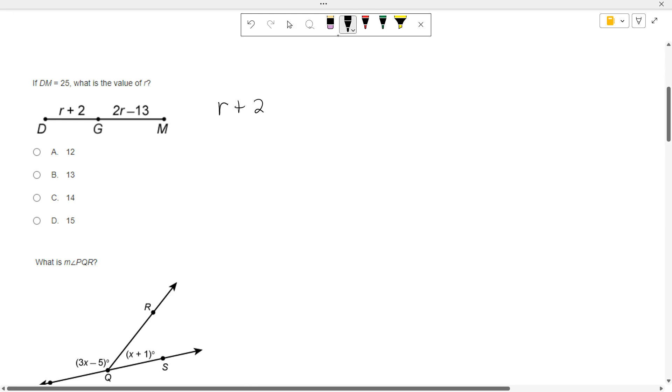If DM was 25, what would you do with these two expressions? Add them up and make an equation. Very good. Add them up and make an equation. On the left side, we combine like terms. R plus 2R is 3R.